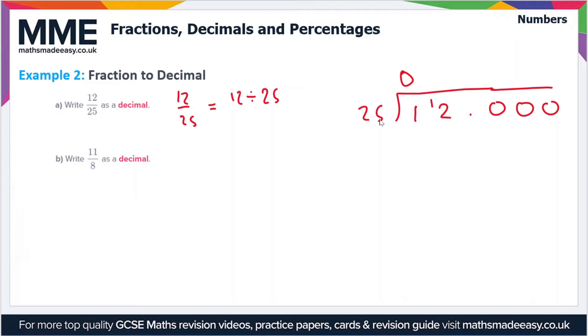And then again we've got how many times does 25 go into 12? Again the answer is 0, so we put 0 here and carry the 12. Let's put our decimal point in. So now we have how many times does 25 go into 120? The answer is 4.